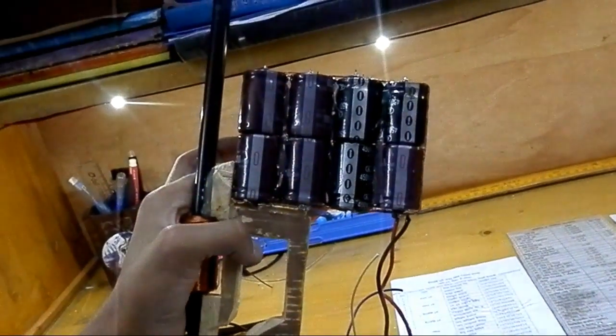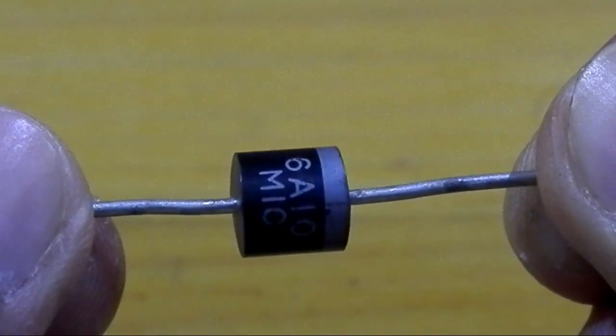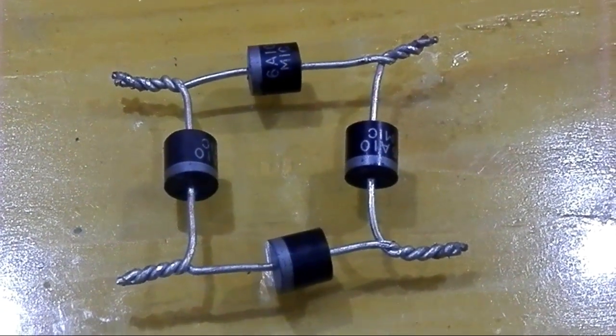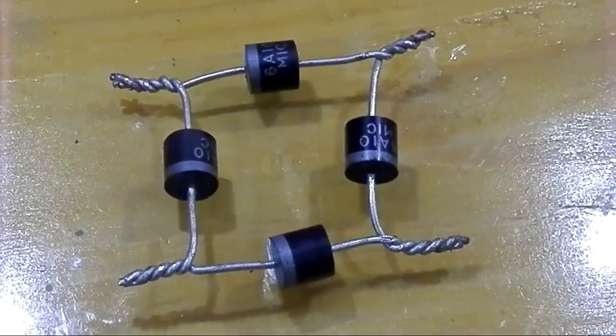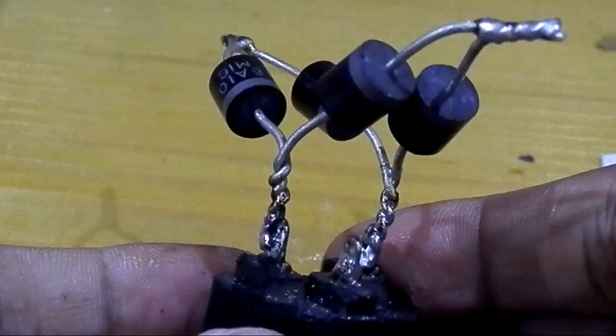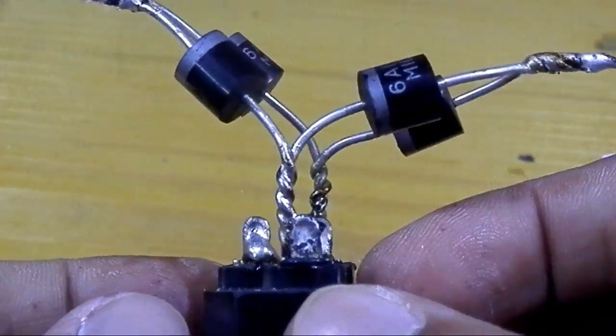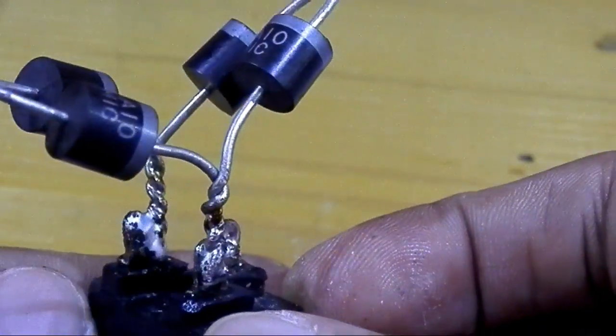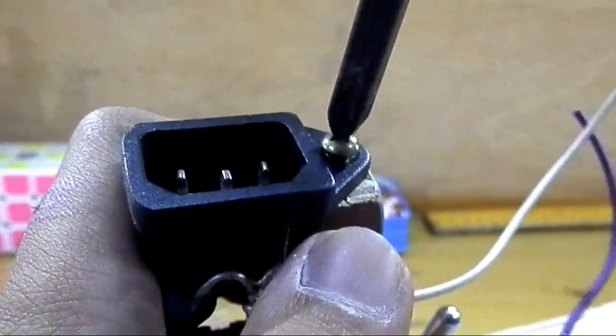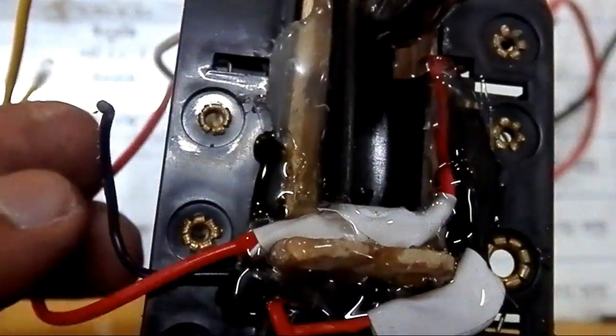I used six 1N4007 diodes to make a rectifier, because capacitors can recharge on AC. I got this part from an old PC power supply. Then I soldered the AC side of the rectifier to that thing and added wires and simply screwed it in place. Then I did some connections with the batteries and switches.